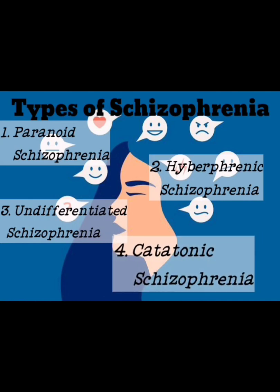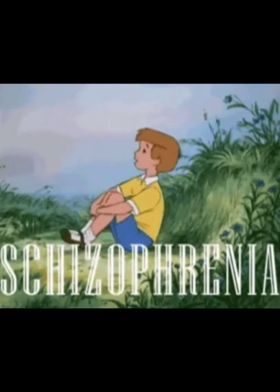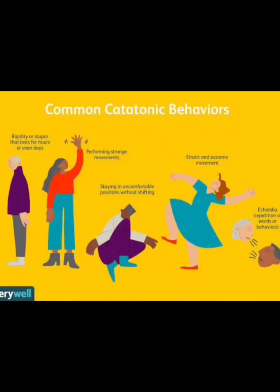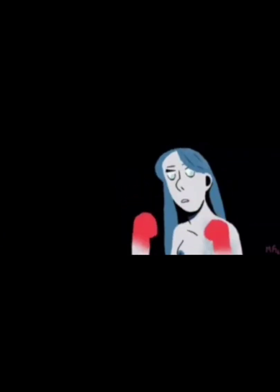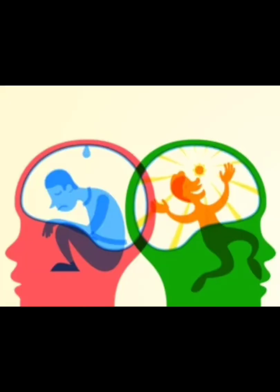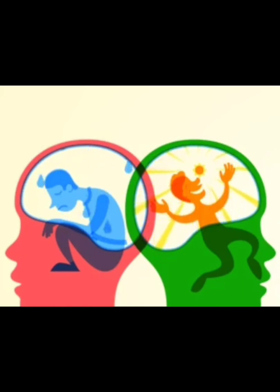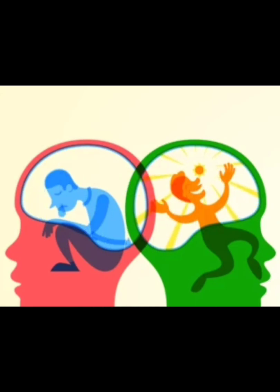Catatonic schizophrenia is rarer than the other types. The patient is at risk of malnourishment and self-injury — they will not eat and will be inclined to injure themselves. It features unusual movements, often switching between extremes of overactivity and stillness, indicated by having two different extremes: extremely lazy or extremely overactive.